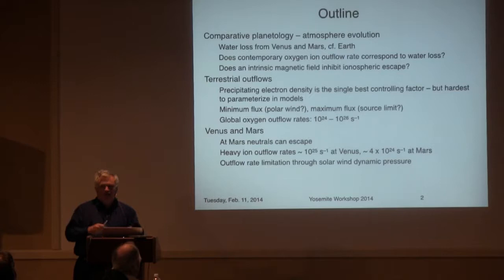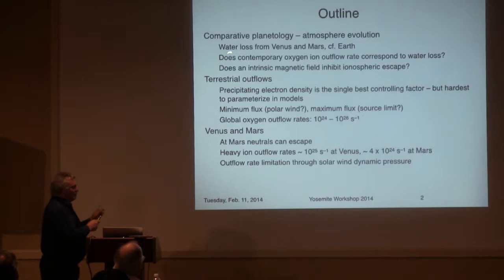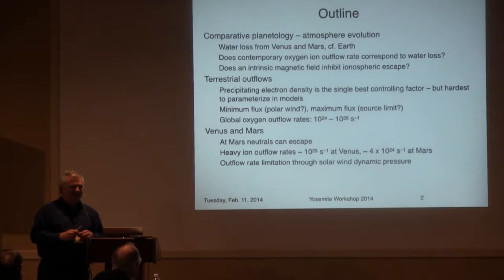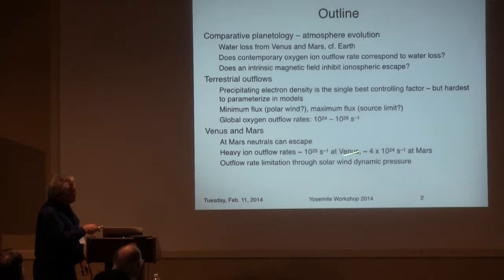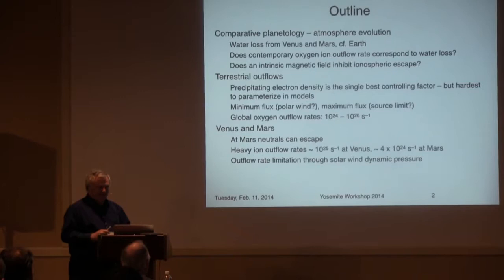Venus and Mars have no magnetic field. But at Mars, neutrals can escape; at Venus they cannot — there's not enough energy in strictly neutral interactions to get escape velocity for heavy ions. But the heavy ion outflow rates at Venus are about 10²⁵, and at Mars a few times 10²⁴. You're beginning to see similar numbers, and I think that's probably telling us something, though I'm not sure what yet.